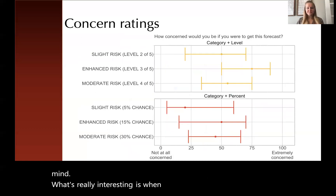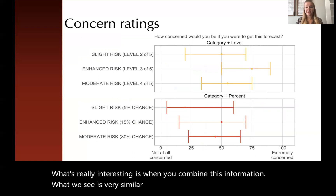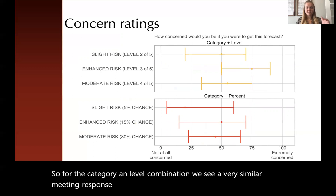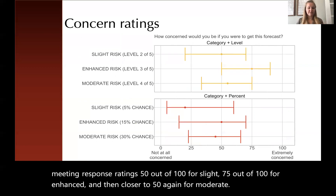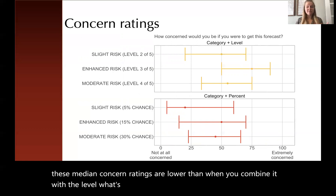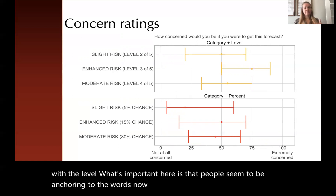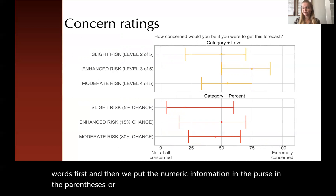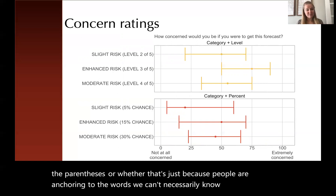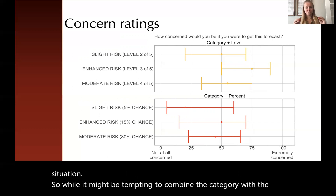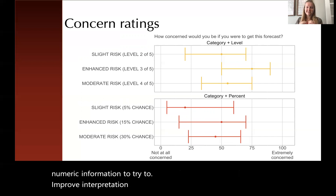When you combine this information, the results are very similar to when you just provide the category. For the category and level combination, median response ratings are 50 out of 100 for slight, 75 for enhanced, and closer to 50 again for moderate. Similarly for category and percent, though the magnitude of these median concern ratings is lower than when combined with the level. Importantly, people seem to be anchoring to the words — so while it might be tempting to combine category with numeric information to improve interpretation, at least in these results, that doesn't have much of an effect.